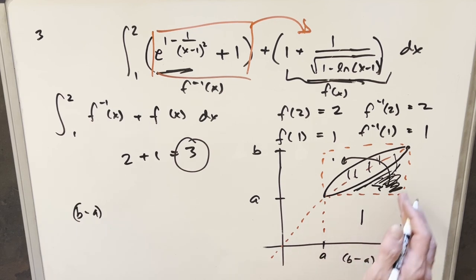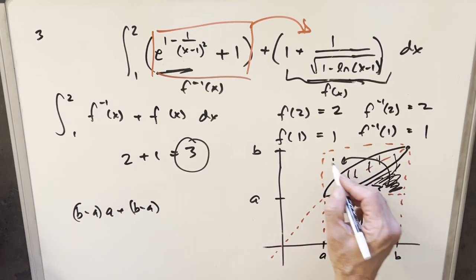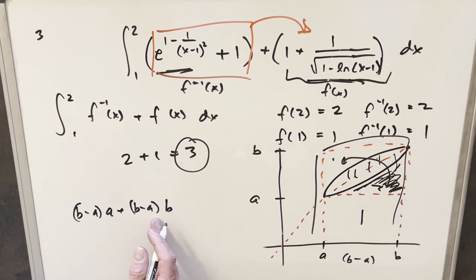And then we want the area of the lower box and then the area of the whole thing. So it'd be like B minus A times A. And then plus, it'd be B minus A times the upper height. To get the larger box, we'd have B minus A times B here. Rearranging this, we could write it as B minus A times B plus A, or B squared minus A squared.